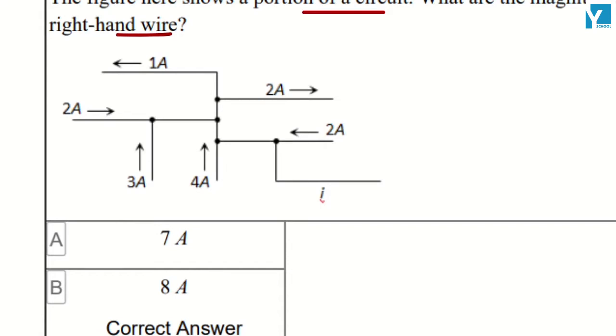So 2 plus 3 is 5 here. When added with 4, it should come out to be at this junction.